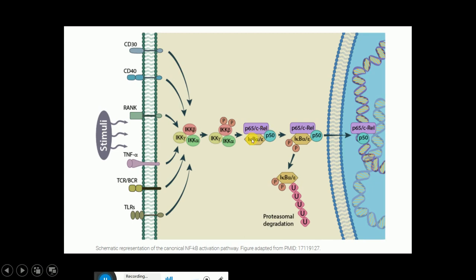Before, when P65, c-REL, and P50 were in association with IKBα/ε, the nuclear localization signal of the NF-κB complex was masked. But now, when IKBα/ε has been degraded, the nuclear localization signal of the P65/c-REL/P50 NF-κB complex is unmasked. Therefore, this NF-κB complex can travel to the nucleus, where it causes transcription of target genes, ultimately leading to protein synthesis.